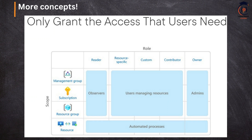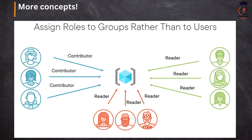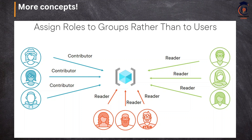Other important concepts: grant only the access the user really requires — least privilege is the best practice. The screenshot shows how access is given at different scopes. Assign roles to groups, not to individual users. If you have five users who need the same set of permissions, create a group, assign the role to the group, and add users to the group. When someone leaves or no longer needs access, simply remove them from the group. That's how organizations do it, and that's what Azure recommends.